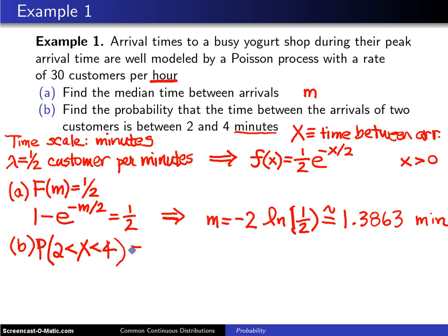In this particular case we want to integrate the probability density function, which is one half e to the minus x over two dx, between two and four. The integral of this particular probability density function will be minus e to the minus x over two evaluated from two to four.